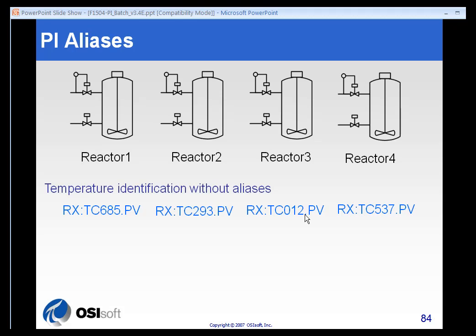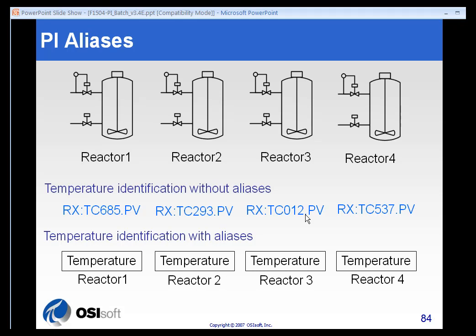That probably makes sense to someone in the process control group — the instrument technician or the process control engineer — it's probably very logical, but to everybody else, they don't know what that refers to. Figuring out what's happening in Reactor 3 can be very difficult. With aliasing in the Module Database, I simply create modules for each reactor, and in each module I can have a temperature alias. I can build reports and displays and query for data only knowing I need Reactor 3's temperature value — I don't have to know the tag name. It'll resolve it for me. That's essentially what the alias function of the Module Database does in the PI System.